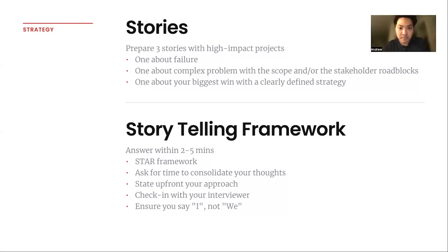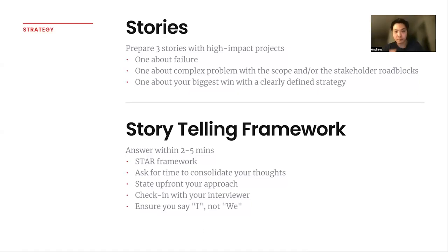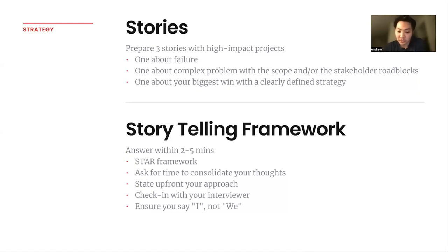Let's go over a few strategic points on how to prepare. First, prepare three stories with high-impact projects. I recommend three core principle projects: one story about failure — whether on a specific project or something personal. The second story is about working on a complex problem with scope or stakeholder roadblocks you had to navigate through, assessing the stakeholder cross-functional management side.